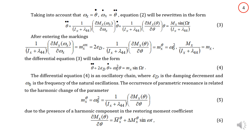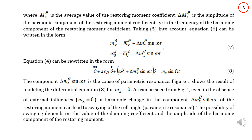The occurrence of parametric resonance is related to the harmonic change of the parameter omega-0 squared, represented by formula 5. Considering all this, equation 4 can be rewritten in the form of equation 8. The component delta-mx times theta multiplied by sin(omega t) in equation 8 is the cause of parametric resonance.